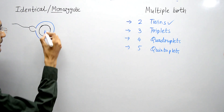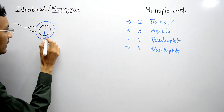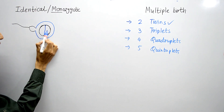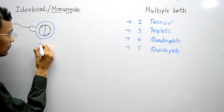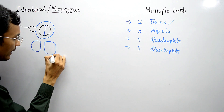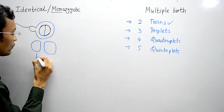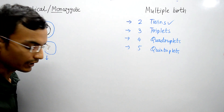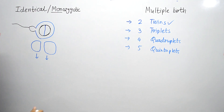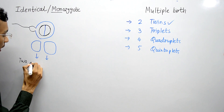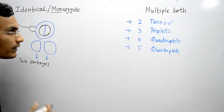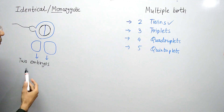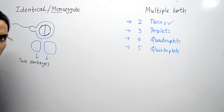When division or cleavage of the zygote occurs, two blastomeres are formed. These two blastomeres get separated from each other and develop into two different embryos, resulting in the birth of two individuals, which are known as identical twins.